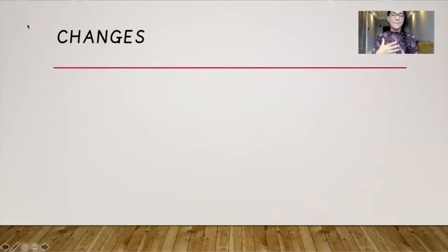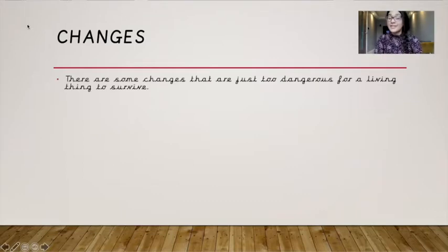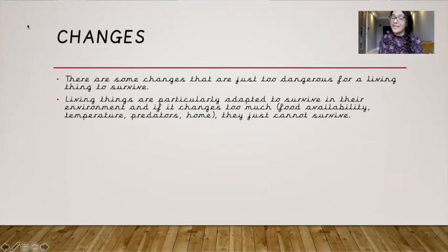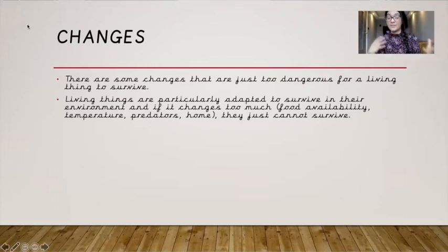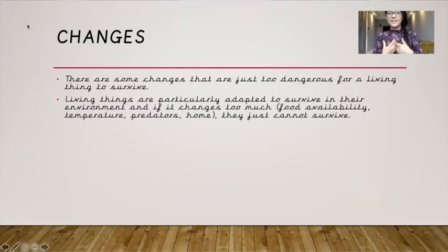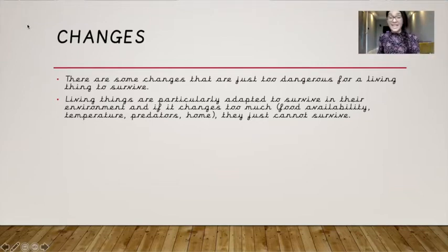We're going to be talking a little bit about changes. There are some changes that are just too dangerous for a living thing to survive. Living things are particularly adapted to survive in their environment, and if it changes too much because of food availability, because of temperature, because of predators, or even just the home in general, they just cannot survive. Remember the word adapted — if you adapt something, that means you're changing. So living things change in order to survive.